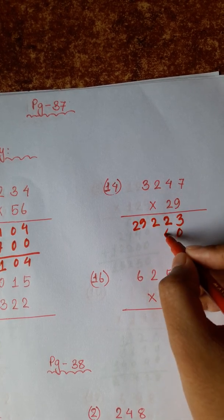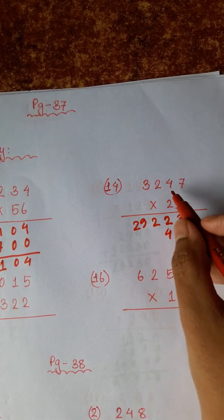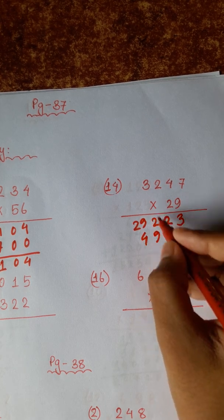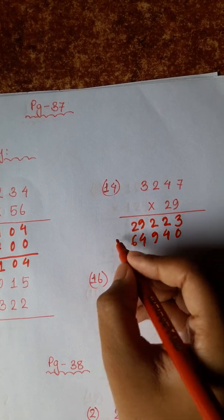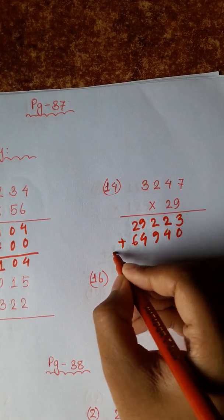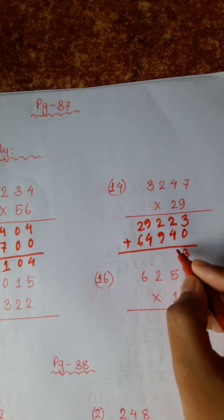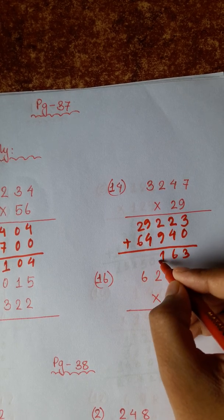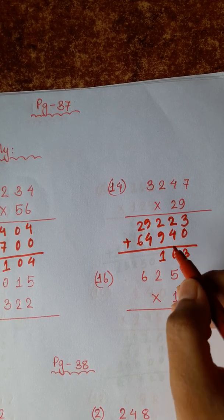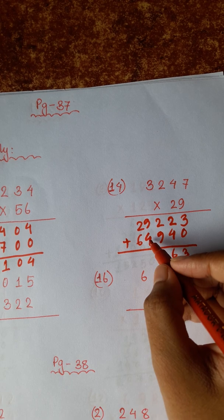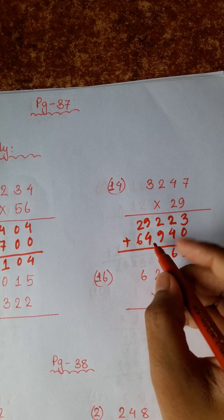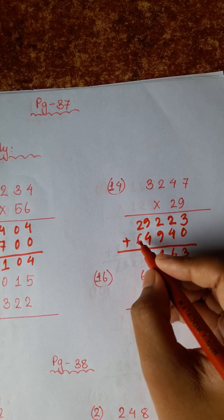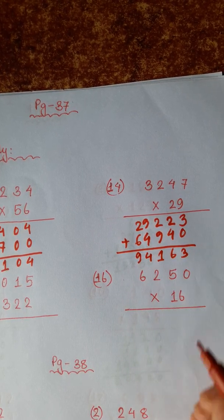7 twos are 14. 1, 4 twos are 8 plus 1 is 9. 2 twos are 4, 3 twos are 6. 7, 3, 6, 11 carry 1, 1, 4, 1, 1, 5, 9 plus 5 is 14, carry 1. 1, 6 plus 4 is 7 plus 2 is 9.